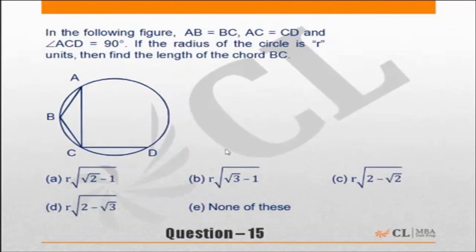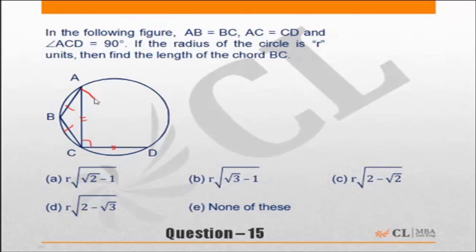Practice exercise 3. In the following figure, AB is equal to BC, and AC is equal to CD — these are given as equal. Angle ACD is 90 degrees. If the radius of the circle is r units, then find the length of chord BC. We need to find BC. We know that AD is 2r.